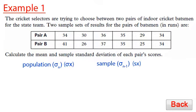Let's look at the question. The cricket selectors are trying to choose between two pairs of indoor cricket batsmen for the state team. Two sample sets of results for the pairs of batsmen in runs are in the table. It wants you to calculate the mean and the sample standard deviation of each pair's scores. So to calculate the mean, first of all, we need to enter these scores.